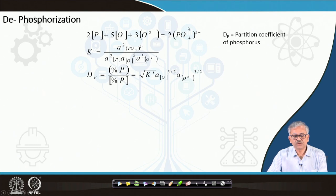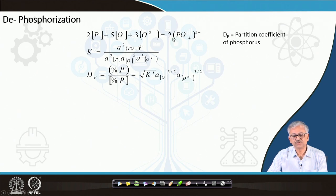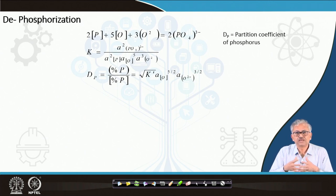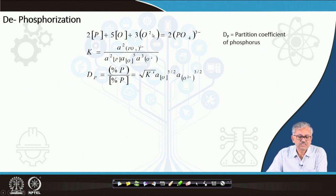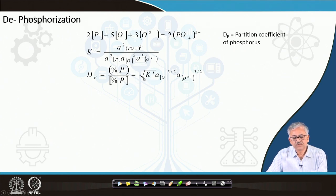Dephosphorization can also be written in terms of ionic theory. Phosphorus and FeO (replaced by dissolved oxygen) react with a basic oxide CaO (expressed as oxygen ion O²⁻ concentration). The right-hand side gives the phosphate ion 2PO4³⁻. In ionic theory, everything in the slag exists as anions and cations, not in molecular form. The equilibrium constant K' can be written as a ratio of activities of products and reactants, and the partition ratio Dp equals K' times activity of oxygen to the power 5/2 times activity of O²⁻ to the power 3/2.